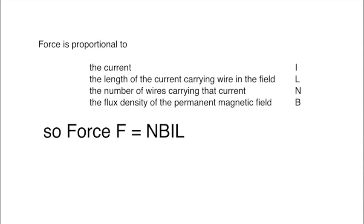The total of the force is equal to N, the number of wires in the coil, B, the flux density, I, the current, and L, the length of the wire within the magnetic field.